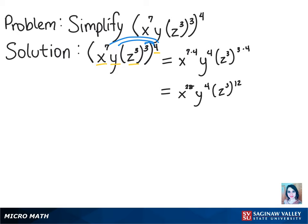Next, we'll want to multiply that 12 and the 3. So then we'll have x to the 28th power, y to the 4th power, times z to the power of 3 times 12.